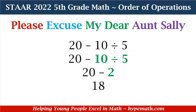Let's look at another example. We have 20 minus 10 divided by 5. We do not have parentheses or exponents in this expression, but we do have division: 10 divided by 5 equals 2. Now our expression is 20 minus 2, and that is equal to 18.